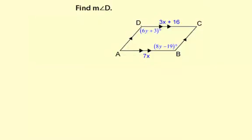Find the measure of angle D. Here's angle D right here. The measure of angle D is represented by 6y plus 3 degrees.